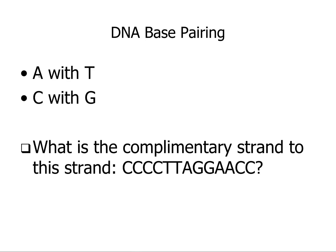DNA base pairing: A's bind with T and C's bind with G. A's and T's have two hydrogen bonds; C's and G's have three. So if you write down a strand of DNA and are asked for the complementary strand — if it's C, then the complement is G, and you work through the sequence: G, G, G, A, A, T, C, C, T, T, G, G. That's the complement strand. T's bind with A's, G's bind with C's. It's really very straightforward.